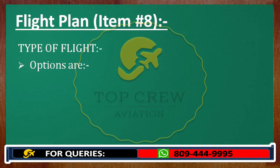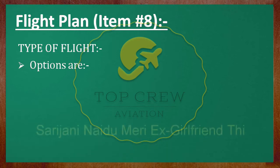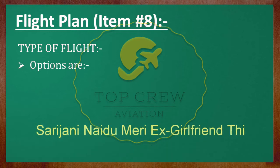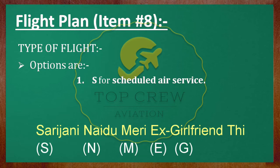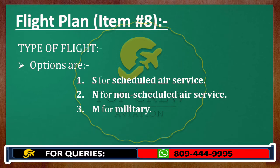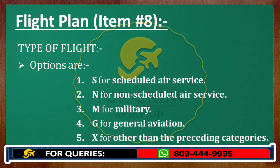What are the options? Let me share my trick for how I remember them — like Sarojini Naidoo Mary, ex-girlfriend T. So: S for scheduled air services, N for non-scheduled air services, M for military, G for general aviation, and X for other than the preceding flight categories.